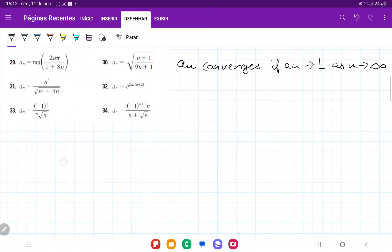For number 33, we want to see if the sequence converges. A sequence a_n converges if a_n tends to a specific limit as n approaches infinity. So we're going to take the limit as n approaches infinity of a_n and see if it approaches a specific number.